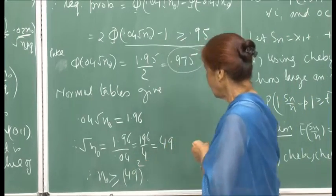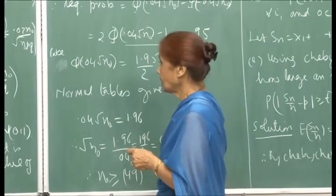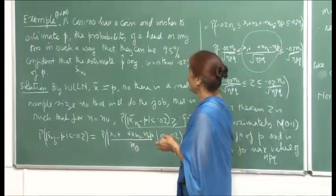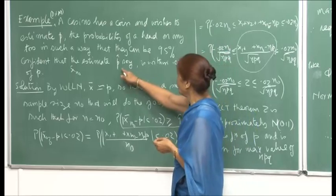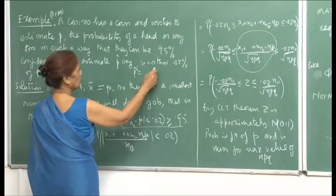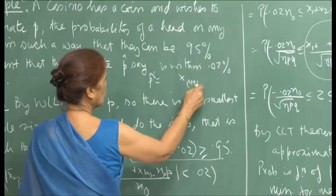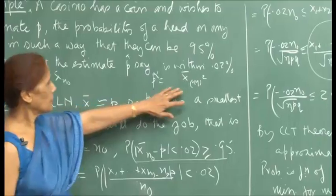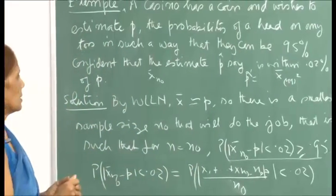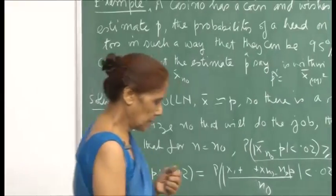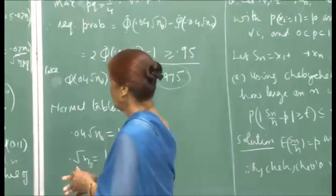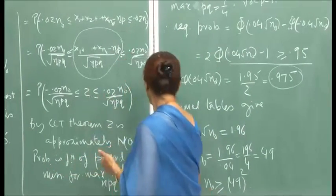So that means, for n_0 >= 2401 sample values (coin tosses), the estimate p-hat = x_{n_0_bar} will be within 0.02 of the true p with probability 0.95. This is an interesting application of the central limit theorem — by reducing the problem to a standard normal probability, we obtained the required sample size.